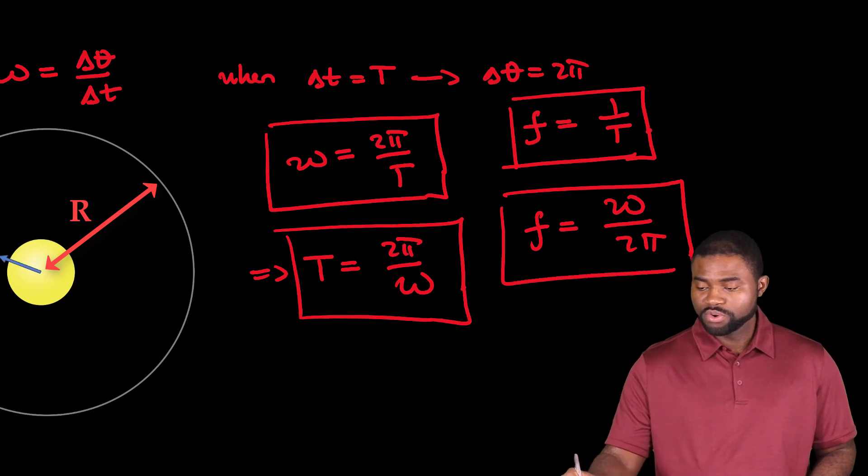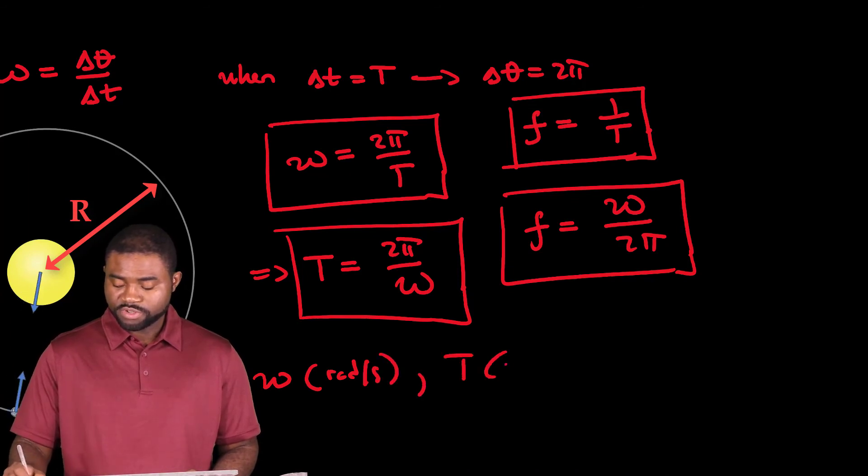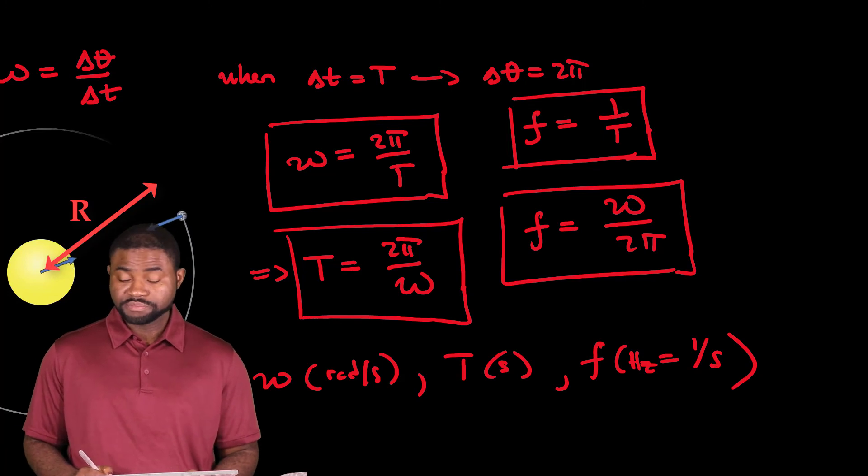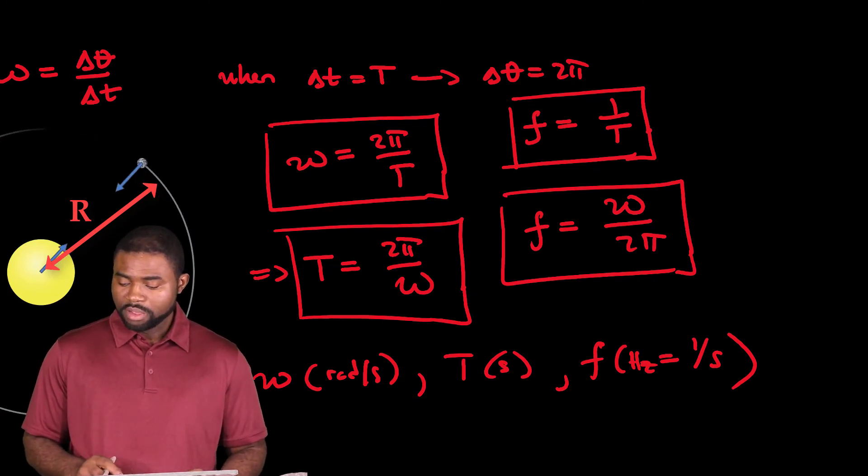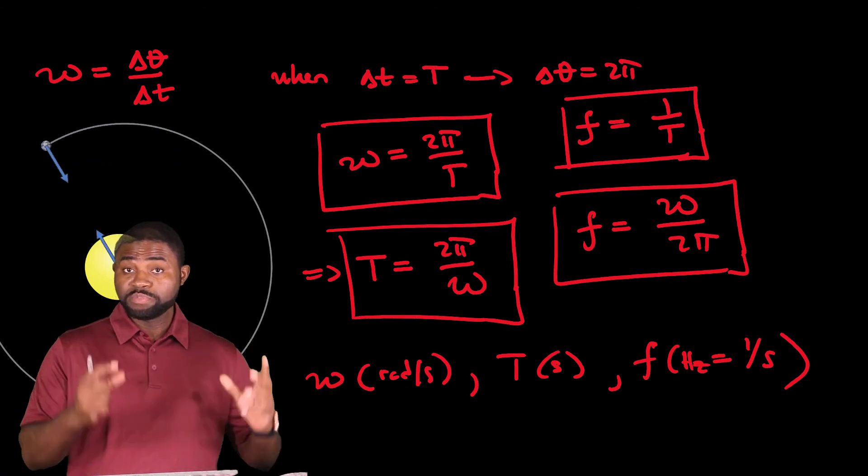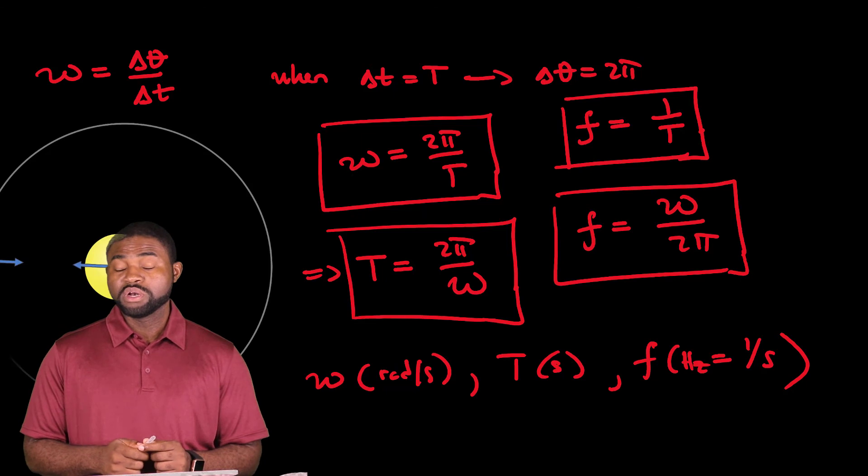Before we go, here's the thing. Omega is measured in radians per second, period is measured in seconds, and frequency is measured in hertz, which is just equivalent to 1 over seconds. And therefore, it is my wish that you understand these things because they will repeat themselves over and over over several chapters in this course. Thank you so much, and have a wonderful day. Bye-bye.